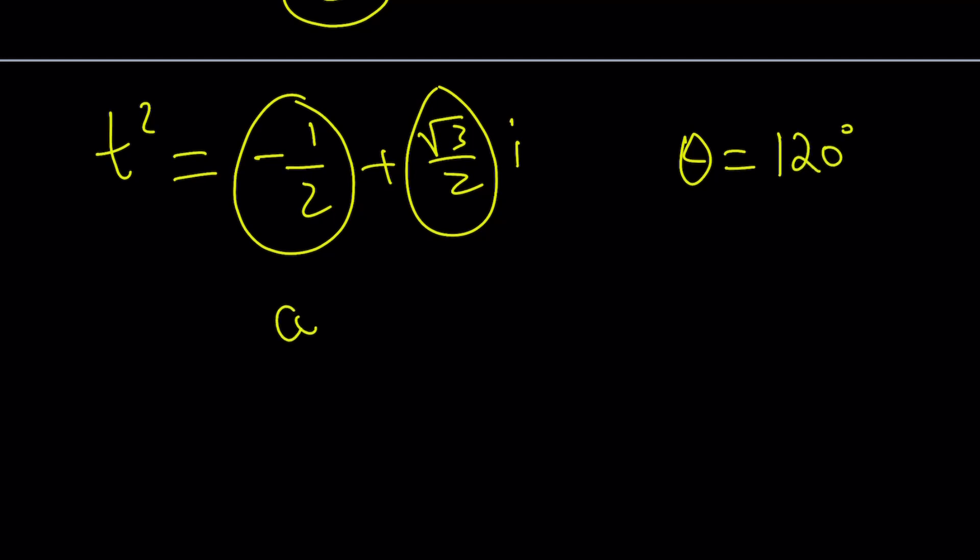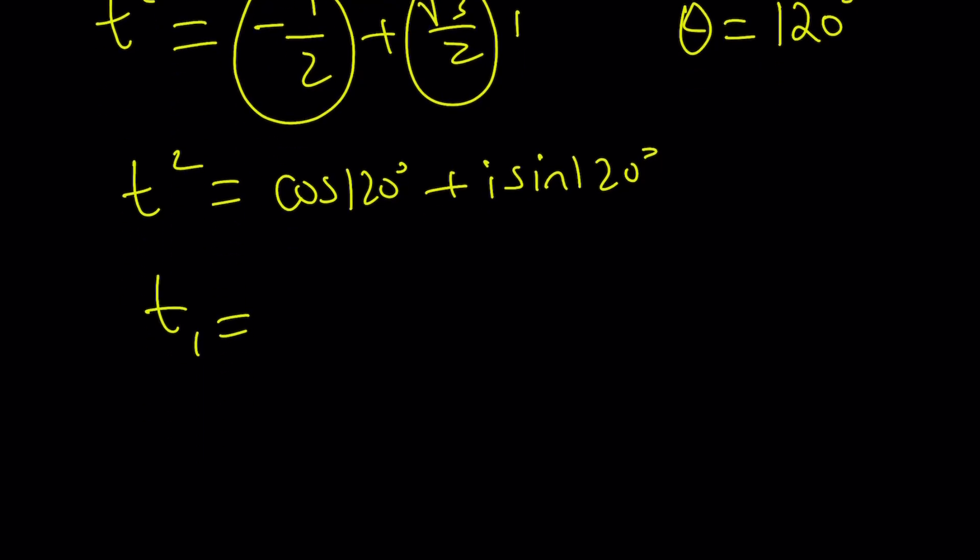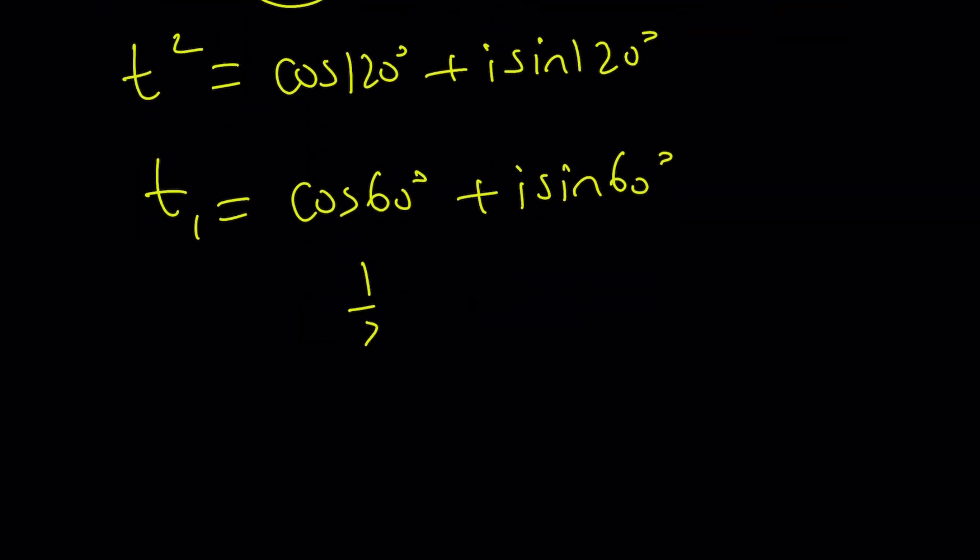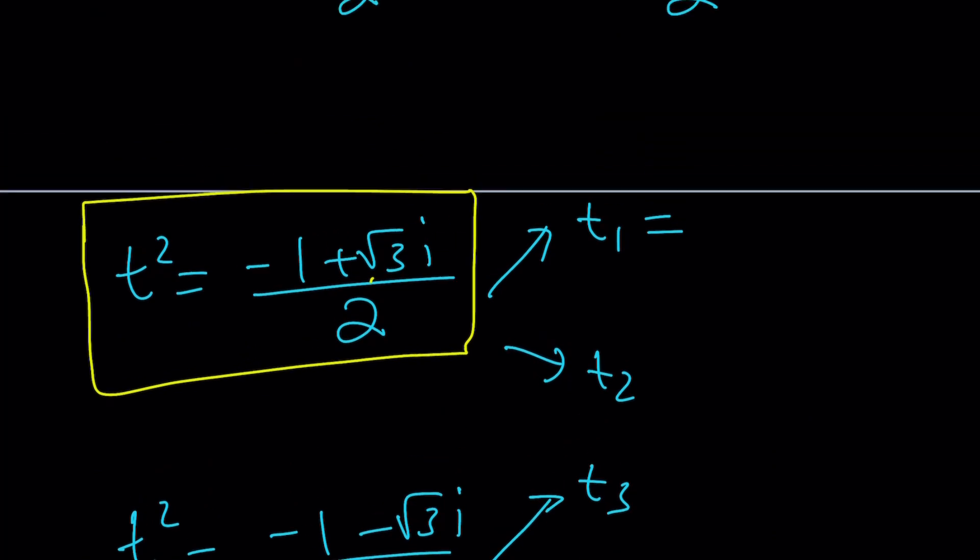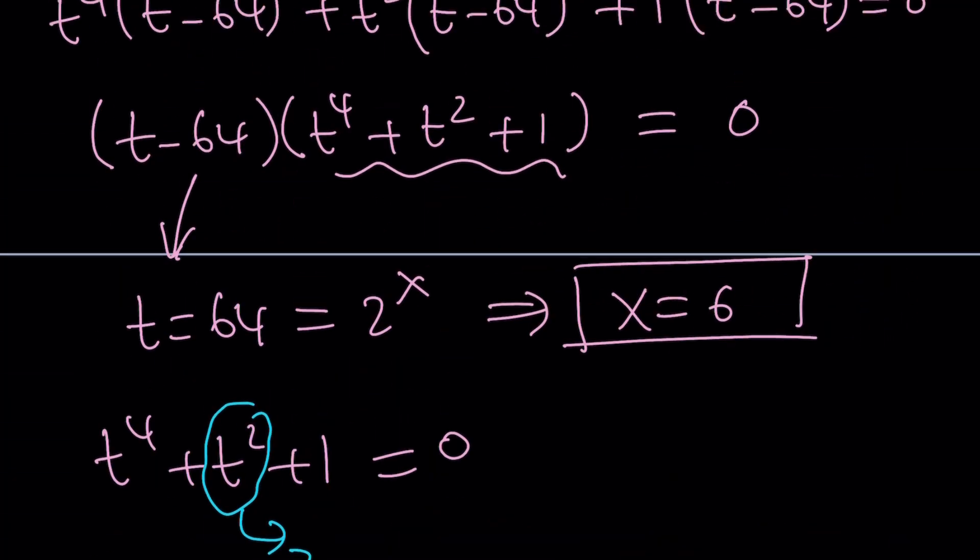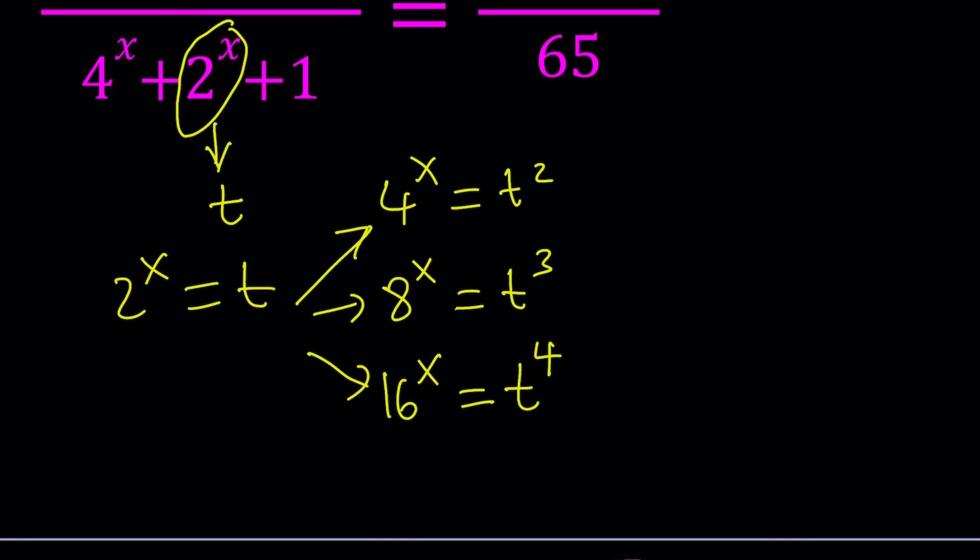I'm just going to write it as cosine 120 plus i sine 120. And then, to find the square root, I'm just going to find the first square root of this number. I'm just going to cut everything in half. It's going to be cosine 60 degrees plus i sine 60 degrees. What is cosine 60? It's the same as sine 30, which is 1 half. And, sine 60 is cosine 30, which is root 3 over 2i. And, that's going to be one of the t values. But, we're not looking for t. We're looking for x. What is the relationship? t is equal to 2 to the power of x.